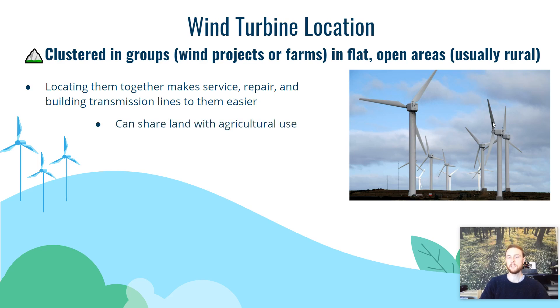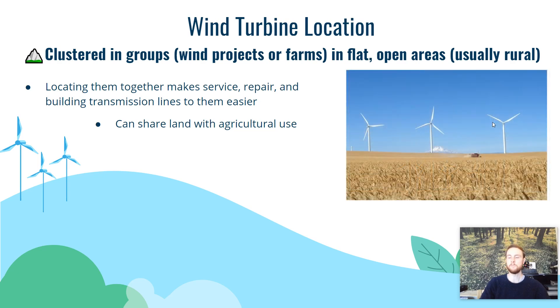Wind farms can share land use, especially with agricultural purposes. We can see fields where crops are grown alongside electricity production. That's fairly unique — we can't necessarily do that with many other forms of electricity generation.